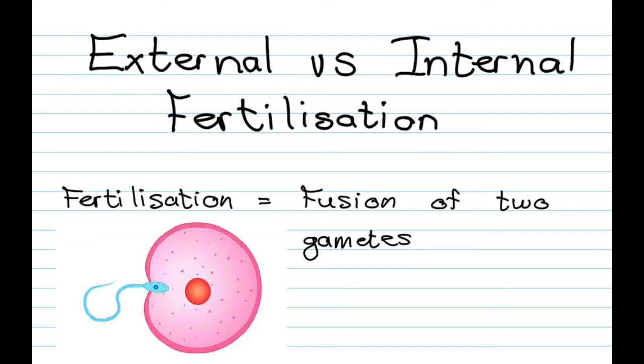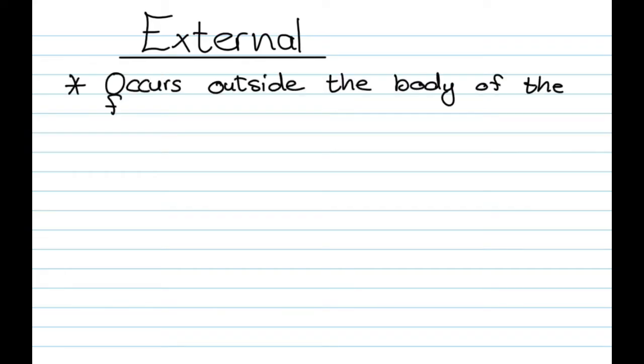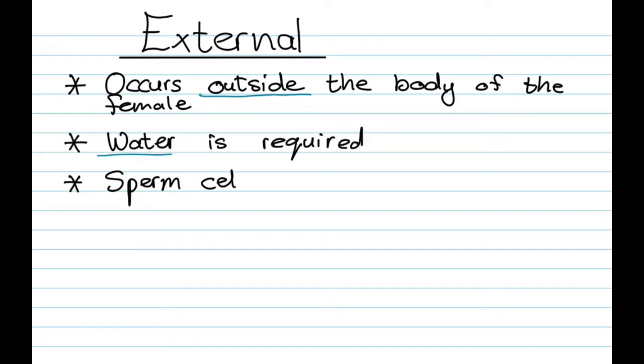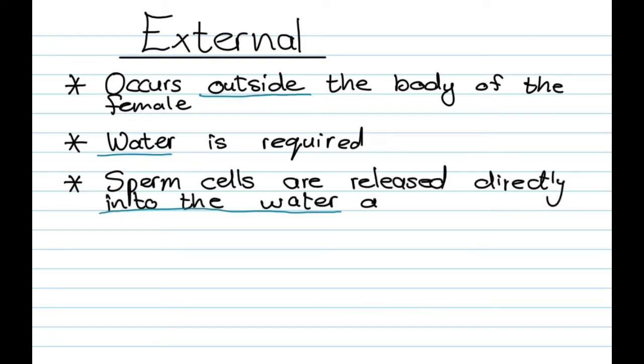Now external fertilization occurs outside of the body of the female and it's going to need water, so water is a requirement. And what's going to happen is that the sperm cells are released directly into the water and they fuse with the egg cell outside of the female's body.